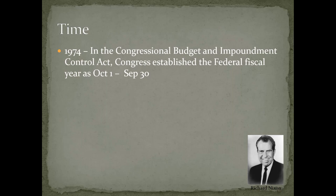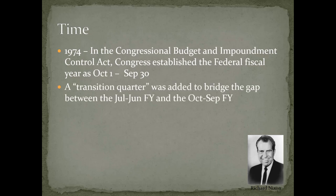In 1974, the Congressional Budget and Impoundment Control Act also established the federal fiscal year as October 1st through September 30th. A transition quarter was added to bridge the gap between the July-to-June fiscal year and the October-to-September fiscal year. No change has been made to the fiscal year since 1974.